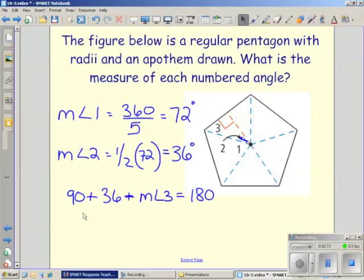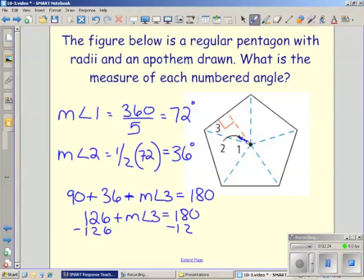So we add 90 to 36, which gives us 126, plus measurement of angle 3, and that gives us 180. Subtract 126 from both sides. And that gives us, measurement of angle 3 is equal to 54 degrees. So we have the measurement of angle 1, 2, and angle 3.